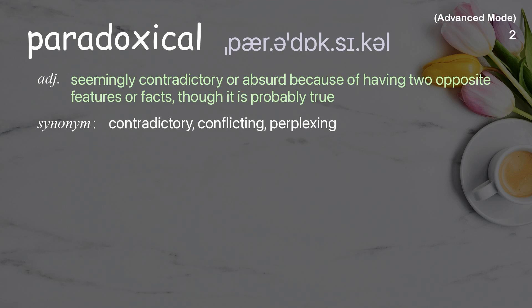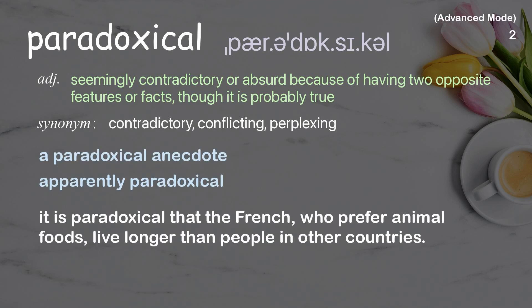Paradoxical. Seemingly contradictory or absurd because of having two opposite features or facts, though it is probably true. Examples: A paradoxical anecdote. Apparently paradoxical. It is paradoxical that the French, who prefer animal foods, live longer than people in other countries.